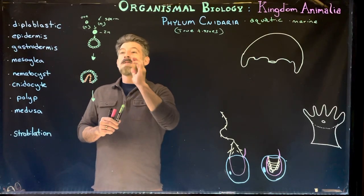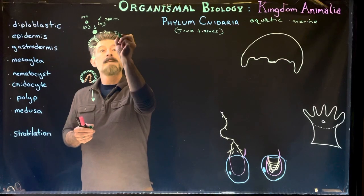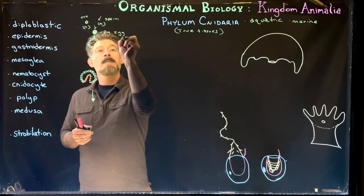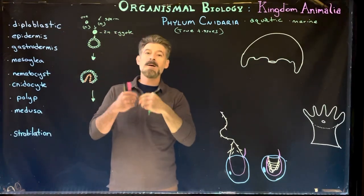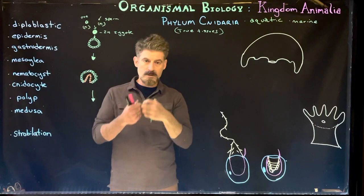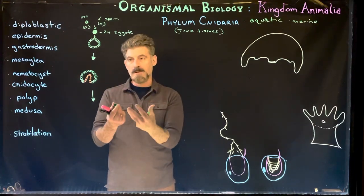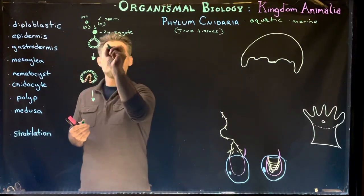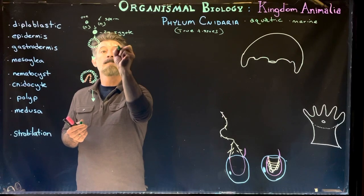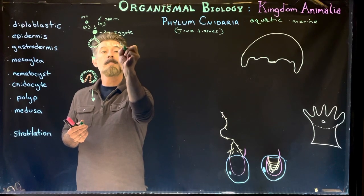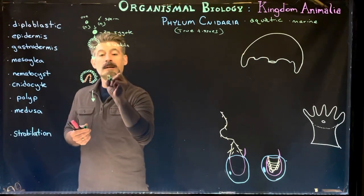Fertilization produces our zygote — the fertilized egg, the beginning of the new embryo. We then get cell division, cleavage — the cells start to divide. It starts to form a blastula, a little ball of cells, and then we start to have gastrulation occur.